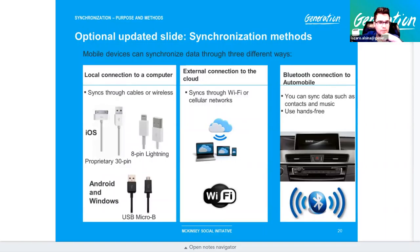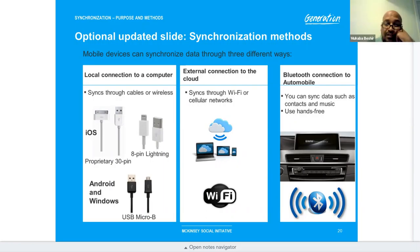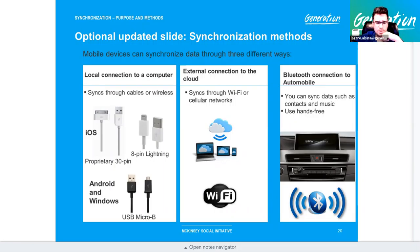Review: Mobile devices can sync data in three different ways. Local — connecting to a computer using a cable or short-range Wi-Fi — is being literal: your PC, not the cloud. External connections to the cloud sync through Wi-Fi or cellular network — as long as you can communicate to the internet (WAN), you are syncing with the cloud.